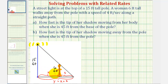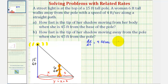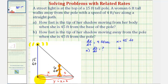Looking at our diagram, notice how we do have similar triangles — a larger right triangle and a smaller right triangle. Now let's talk about the given information. The woman is walking at a speed of four feet per second, which would be how fast x is changing. So dx/dt, the change in x with respect to t, equals positive four feet per second, because x is increasing as she walks away. We're concerned when she's 45 feet from the pole, so x equals 45 feet. For part a, we're trying to determine how fast the tip of her shadow is moving from her body, which is ds/dt. For part b, we determine how fast her shadow is moving away from the pole, which is dy/dt.